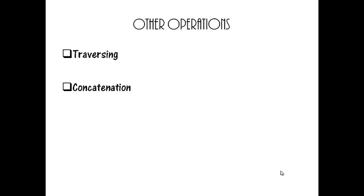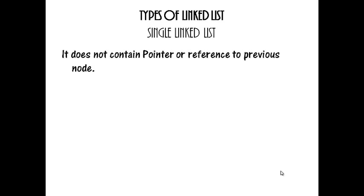Now we will see types of Linked List. Single linked list, circular linked list, double linked list, and circular double linked list are the types of linked list. We will see them one by one.